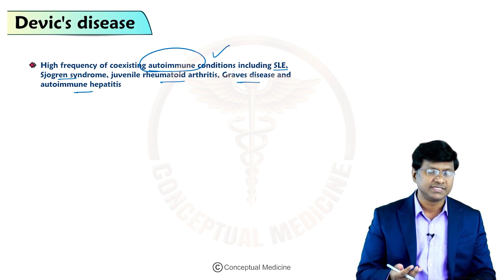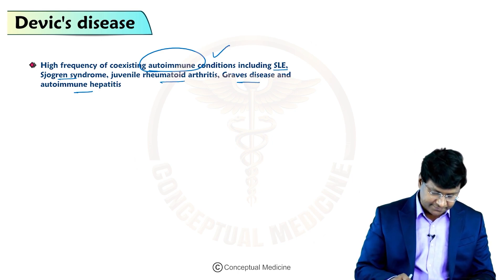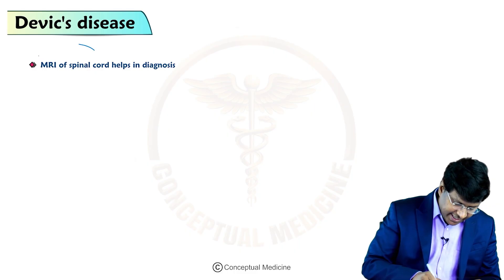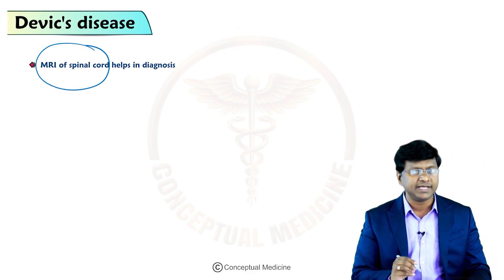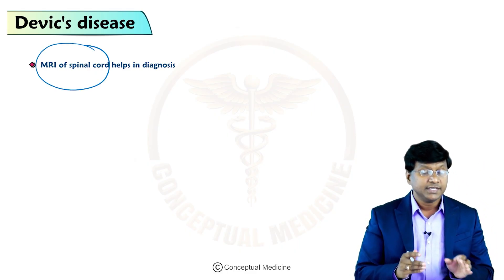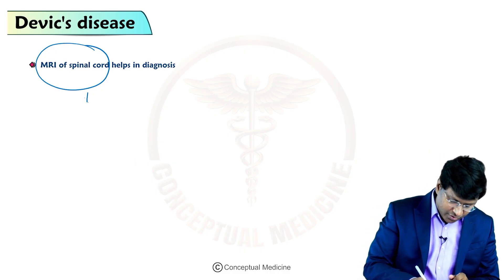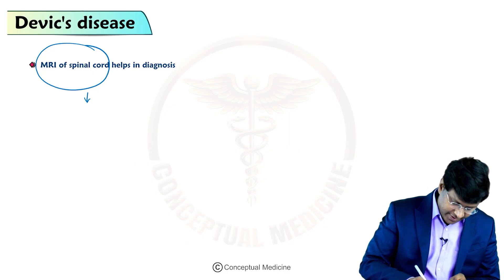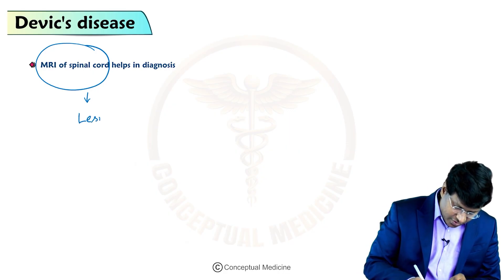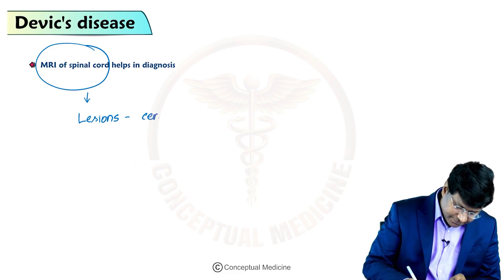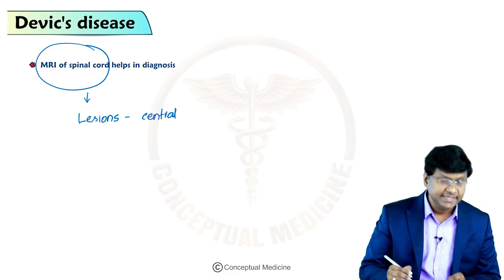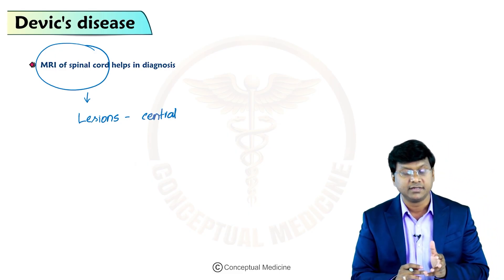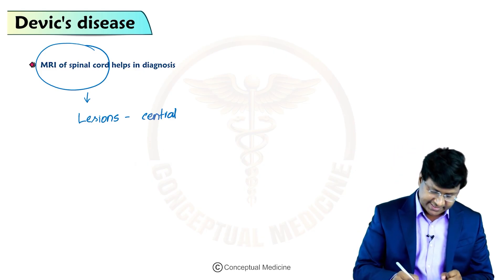To diagnose Devic's disease or neuromyelitis optica, MRI of the spinal cord is helpful. On MRI of the spinal cord, the spinal cord lesions are central, contiguous, and longitudinally extensive.